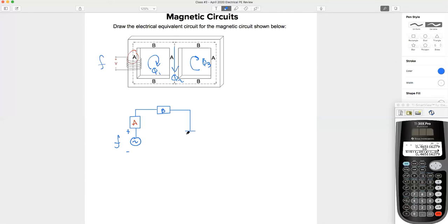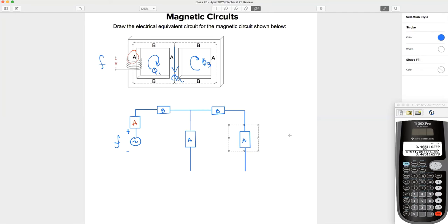Down here, what value of reluctance do I have here? It's going to be A. Great. What's the value over here to the right? There's B again. How about what's the next parallel going down or series with B? That's going to be A again.